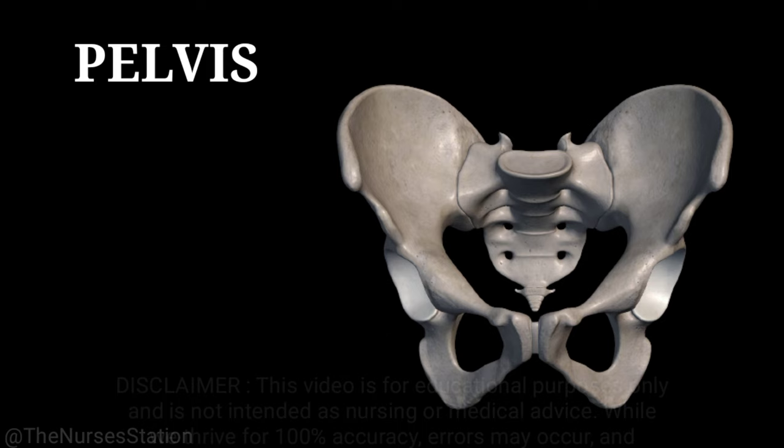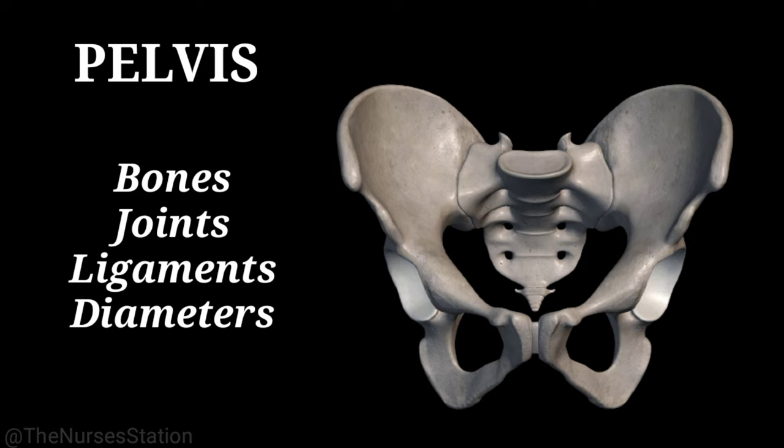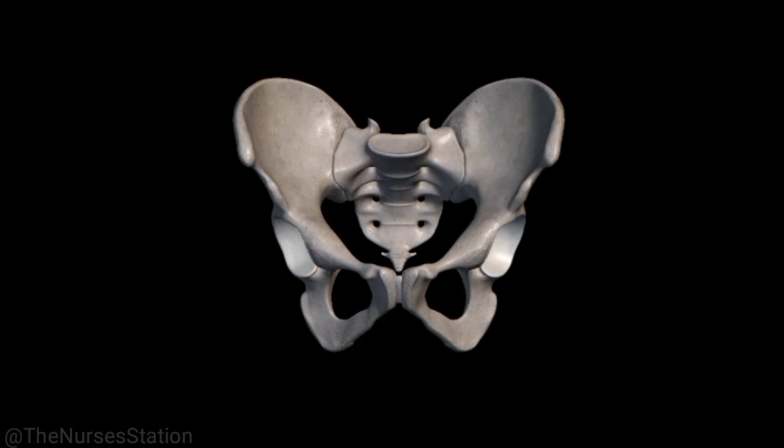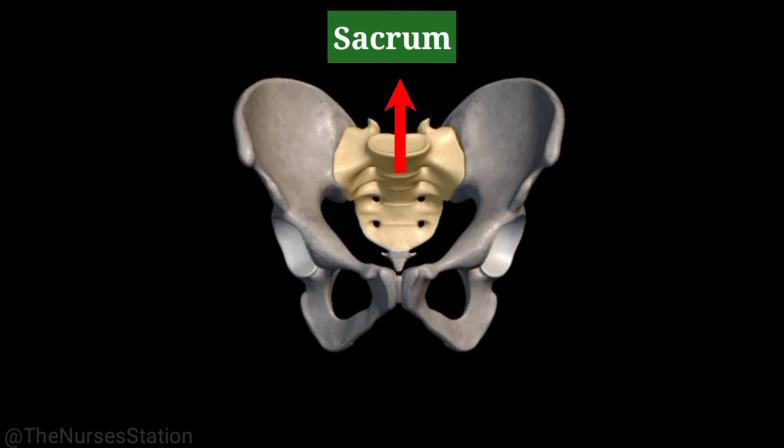In this video we will talk about the pelvis or the female pelvis, including the description of bones, joints, ligaments, and diameters. Starting with the description of bones, the pelvis is formed by four bones: two hip bones, also called the innominate bones.